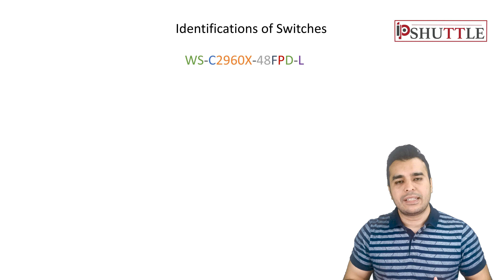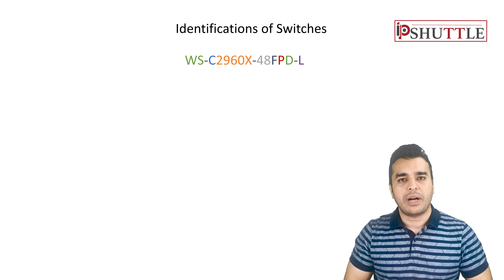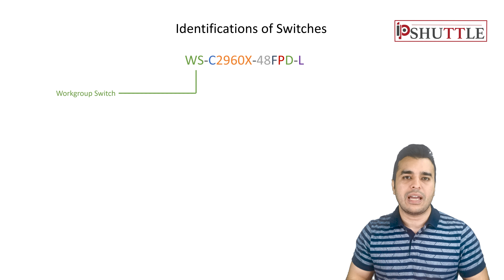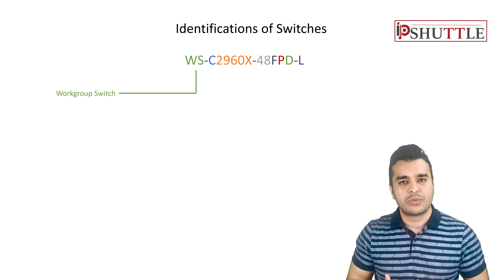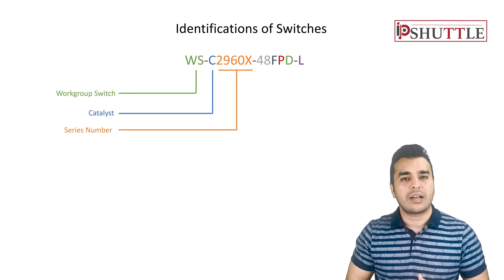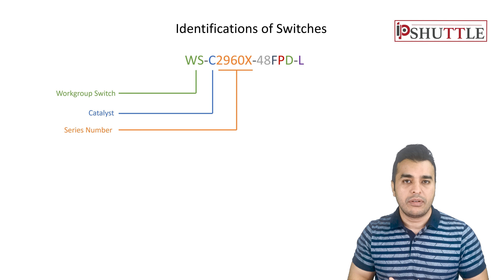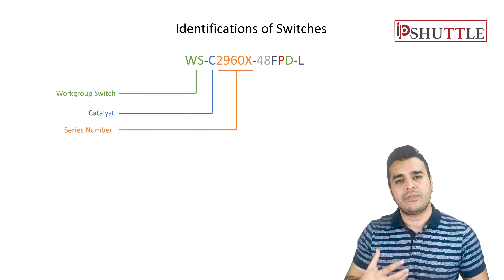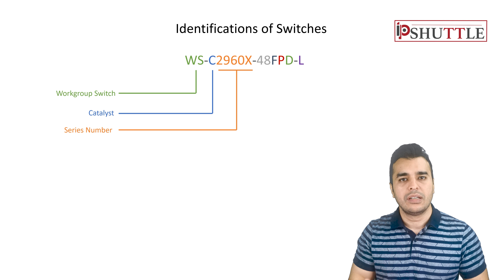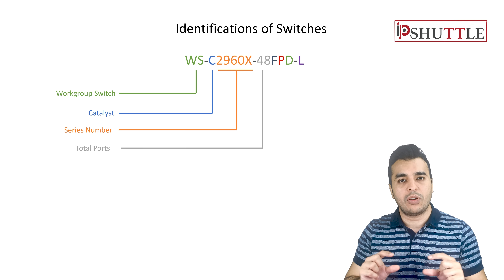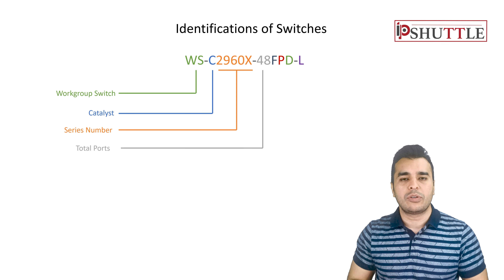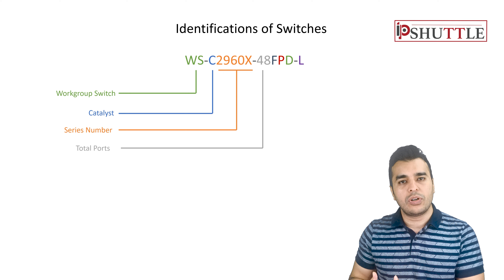The first example is the 2960X, which is an access layer switch. The first part, WS, is a standard part number added to all Catalyst series — it stands for workgroup switch. C means Catalyst, then comes 2960X, the series identifier, which also applies to series like 3850, 3750, 9300, and 9500. The next part, 48, is the port count. Switches come in different variations like 24, 48, or even 92 ports.